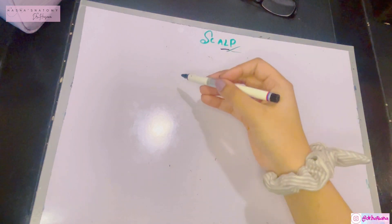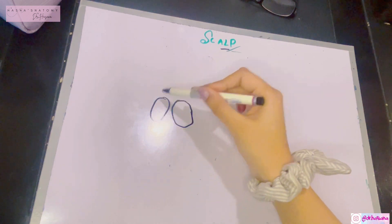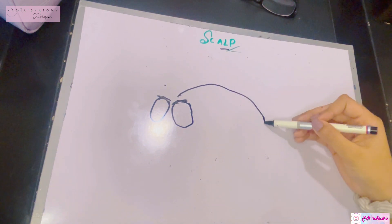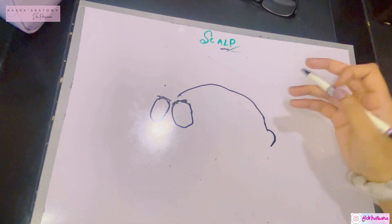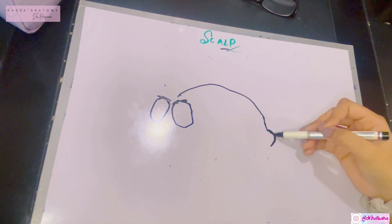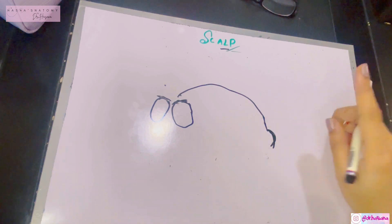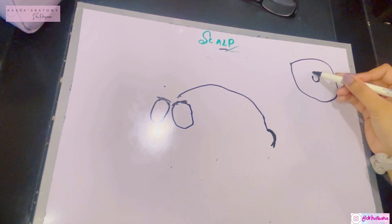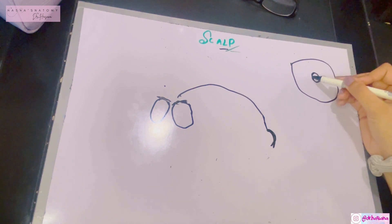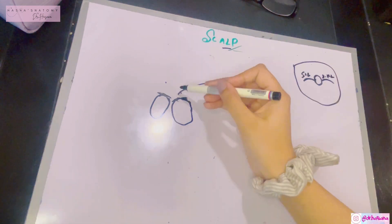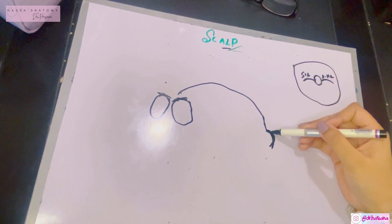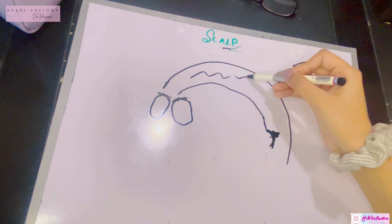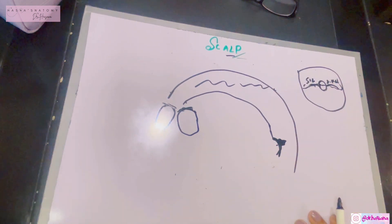We need to talk about the extent of the scalp — where does it extend? Anteriorly, it extends from the supraorbital margins. Posteriorly, it extends to the external occipital protuberance, which is an elevation on the occipital bone. Just next to the external occipital protuberance are the two superior nuchal lines.